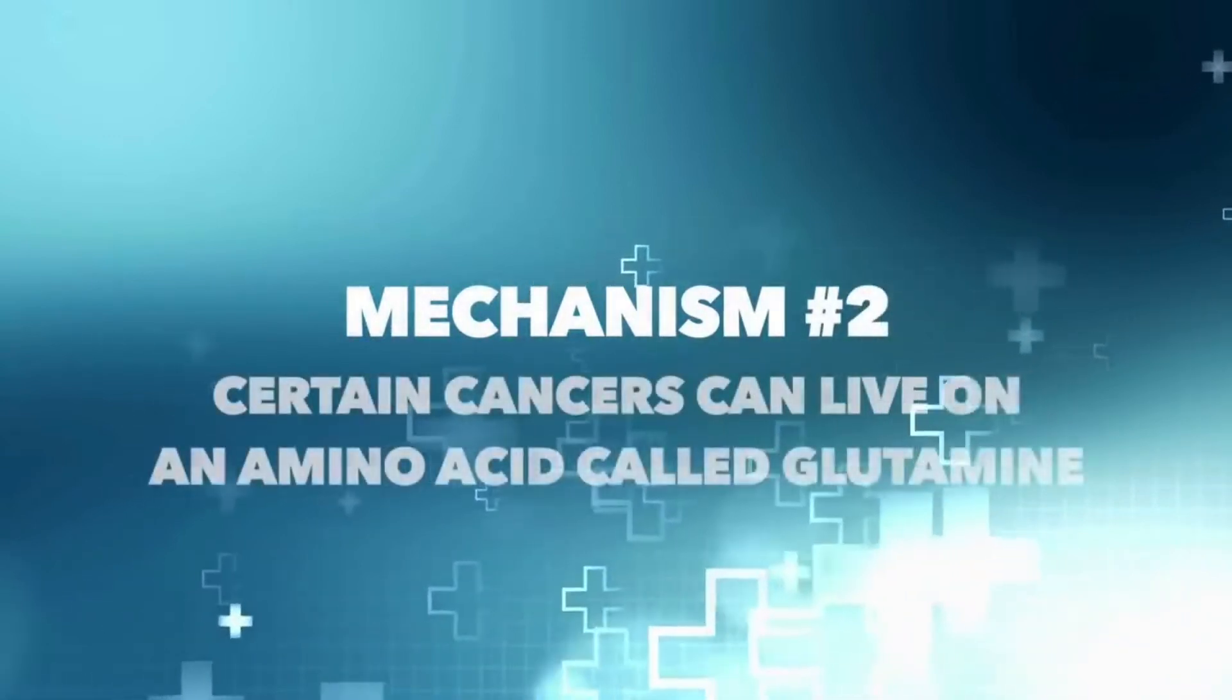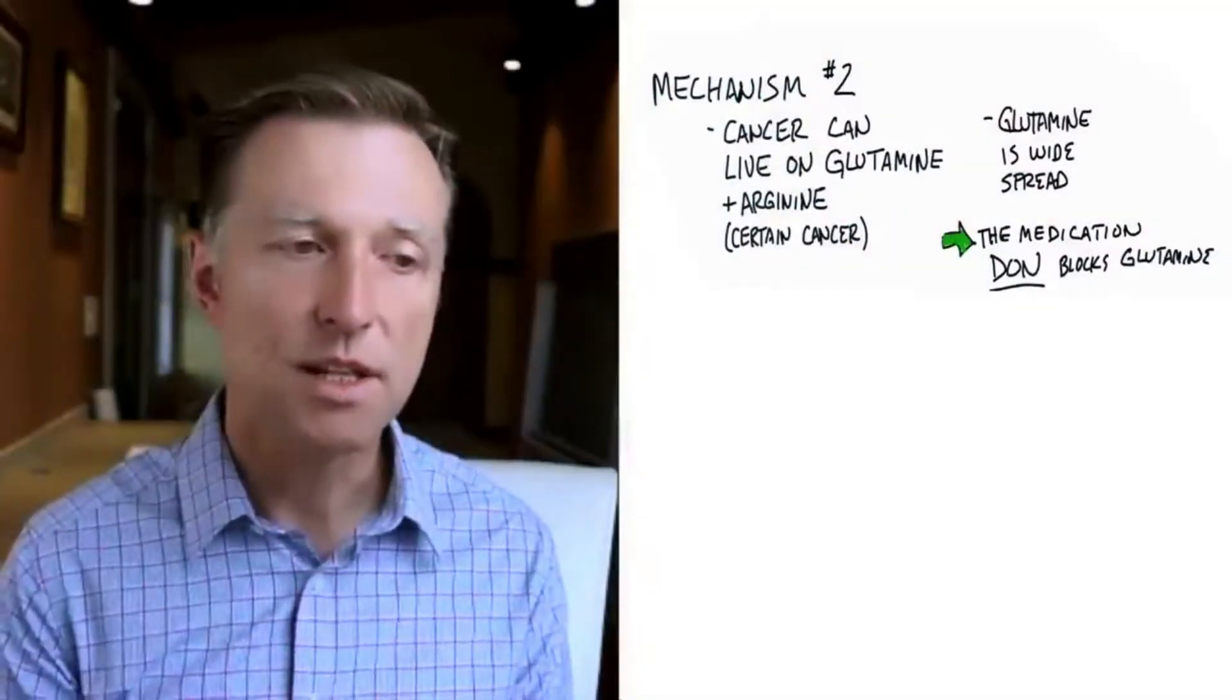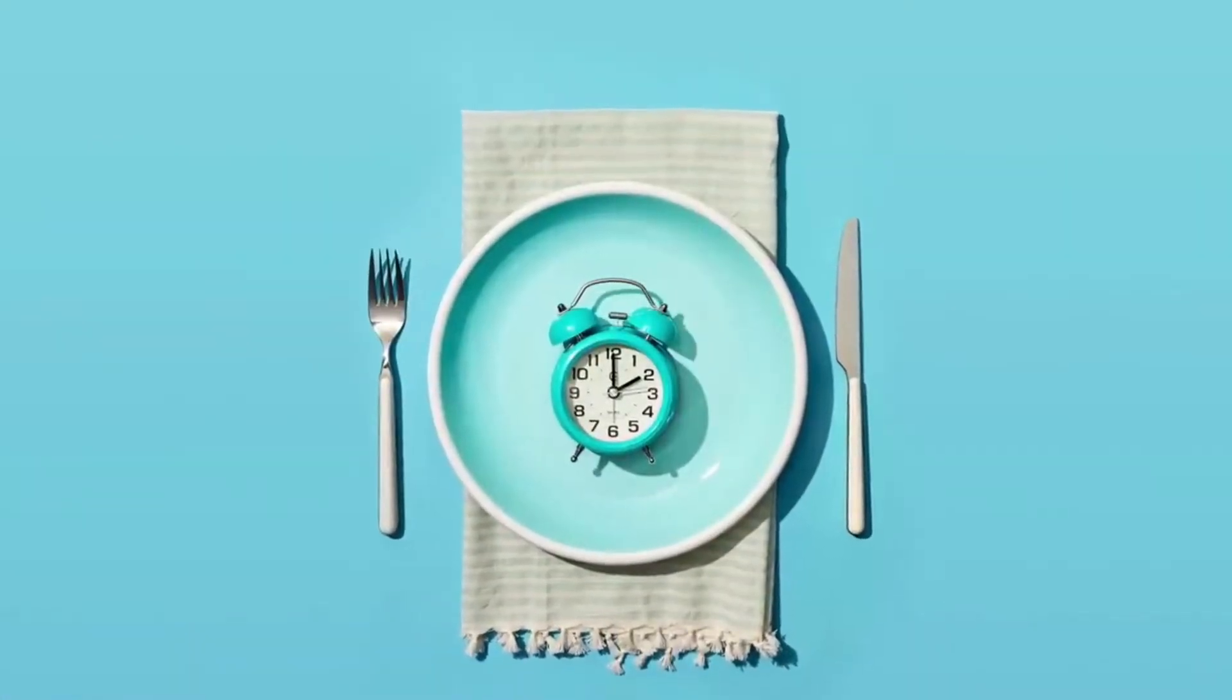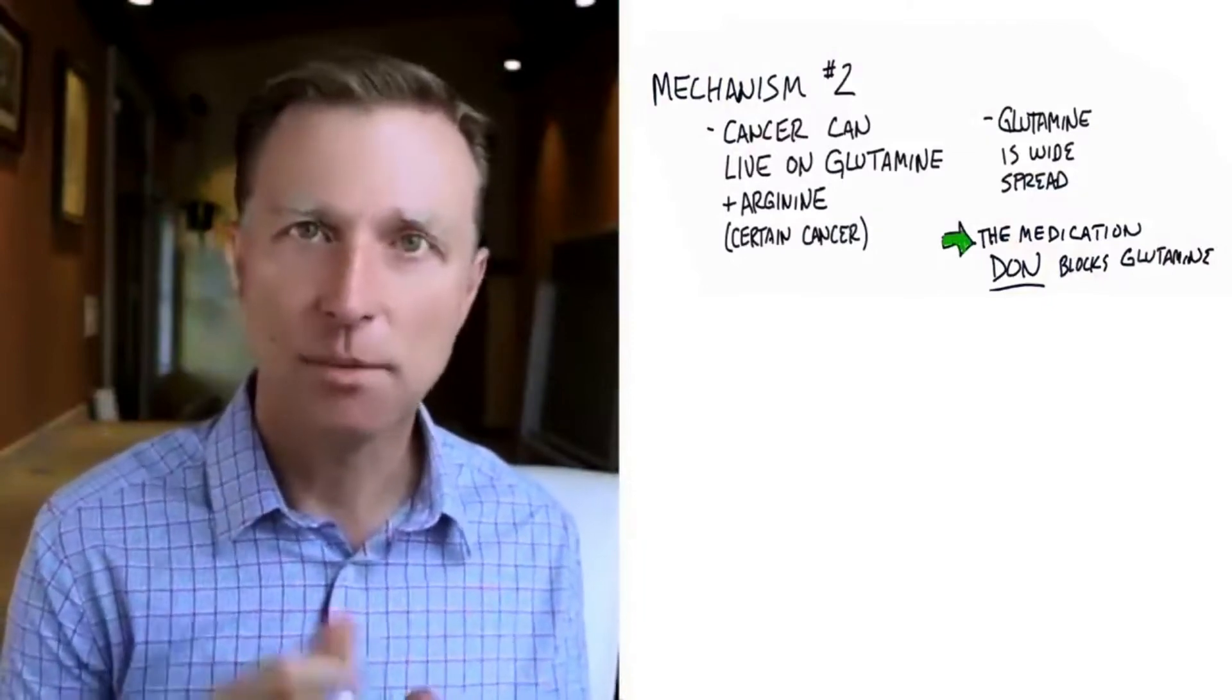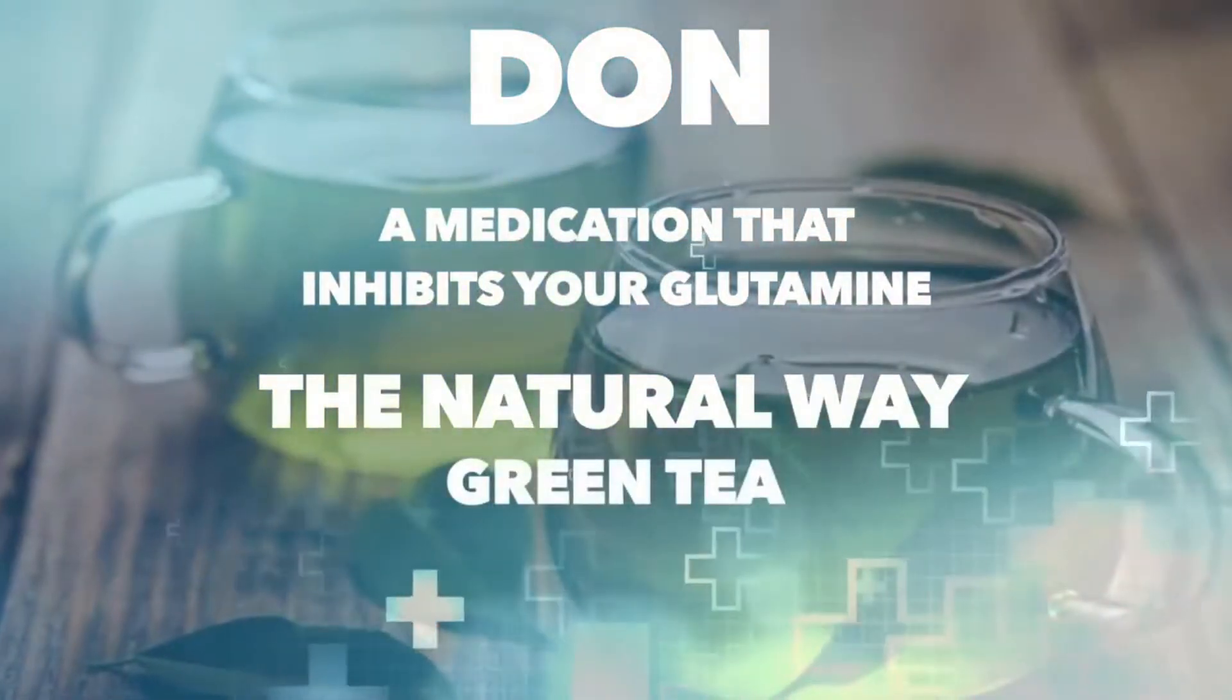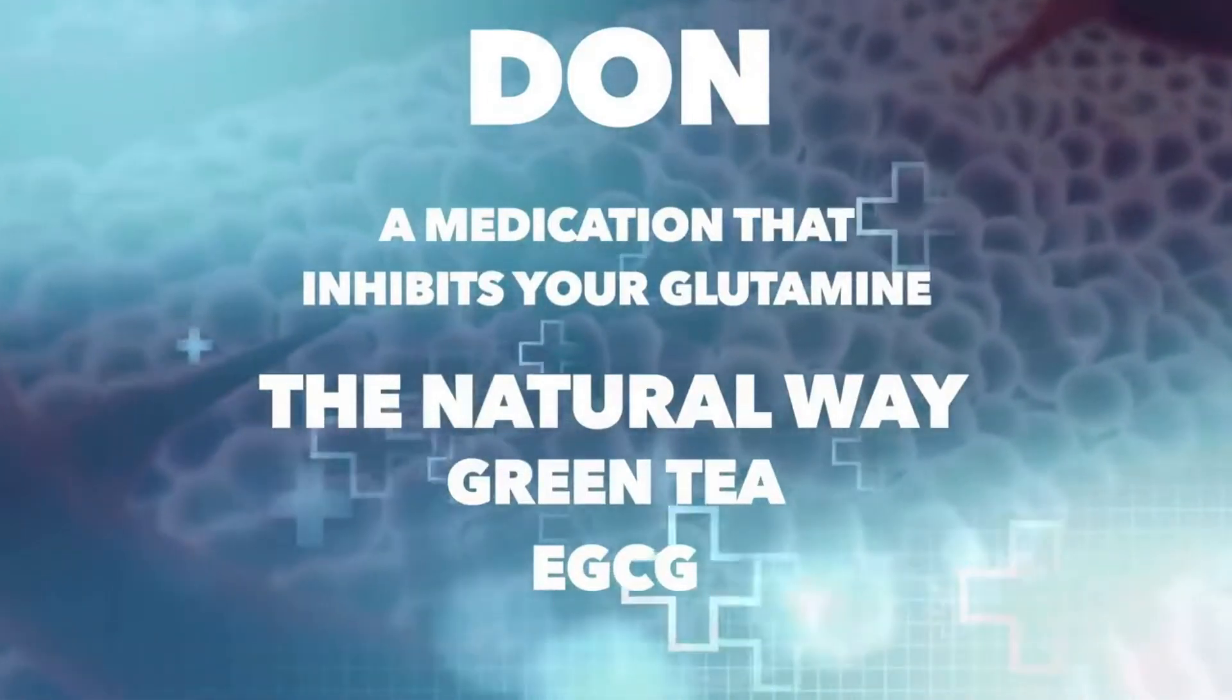Number two, certain cancers can also live on an amino acid called glutamine, as well as another amino acid called arginine. Now, the problem is glutamine, which makes up certain proteins, is very widespread. It's in a lot of different foods. So when you fast, you're not consuming glutamine, so you're going to deprive the cell of this other fuel. There are certain therapies out there right now that are using medications to block glutamine. And one is called DON, which is a glutamine inhibitor. There are also natural glutamine inhibitors as well. Green tea, with its phytonutrient EGCG, also has the capacity to block glutamine, creating an anti-cancer effect. Also, other phytonutrients in green tea are very anti-cancer.